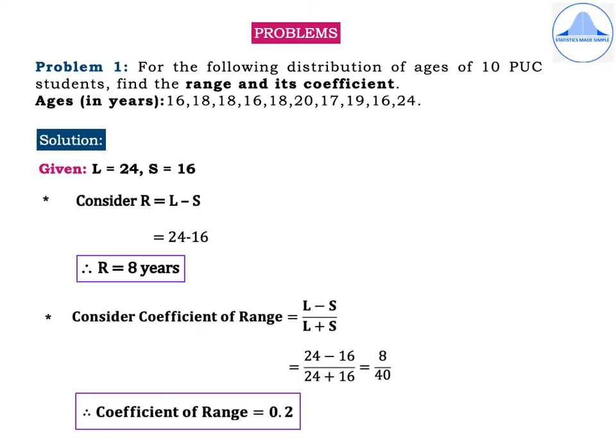Problem 1. For the following distribution of ages of 10 PUC students, find the range and its coefficient. Ages in years are 16, 18, 18, 16, 18, 20, 17, 19, 16 and 24.